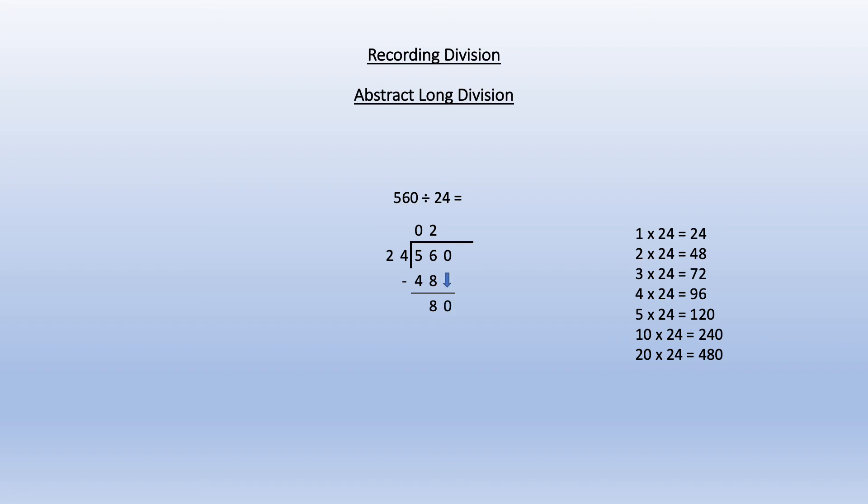I then bring the next digit of the dividend down which is a 0 making my new number 80. The question now is how many times does 24 go into 80. From our multiples list we can see the biggest number is 72. I then take 72 from 80 and it leaves 8. This is a remainder as I can no longer divide by 24.